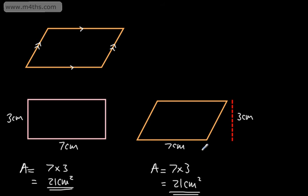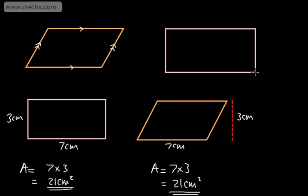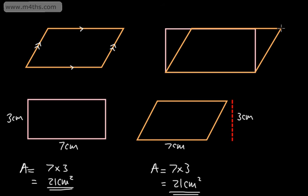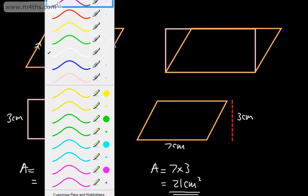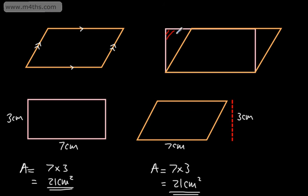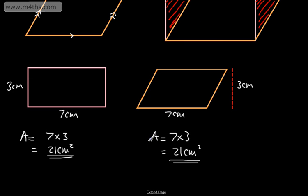The key takeaway is that a rectangle and a parallelogram with the same dimensions use the same formula. To see why, I'll draw both side by side with the same base and perpendicular height. I'll take a triangular part from one end of the rectangle and move it to the other side. We can see these are two congruent triangles, and when rearranged, the parallelogram occupies exactly the same space. So simply think of it as the area of a rectangle.